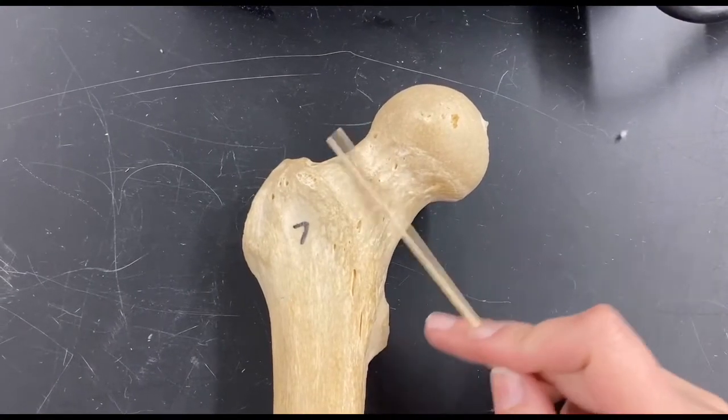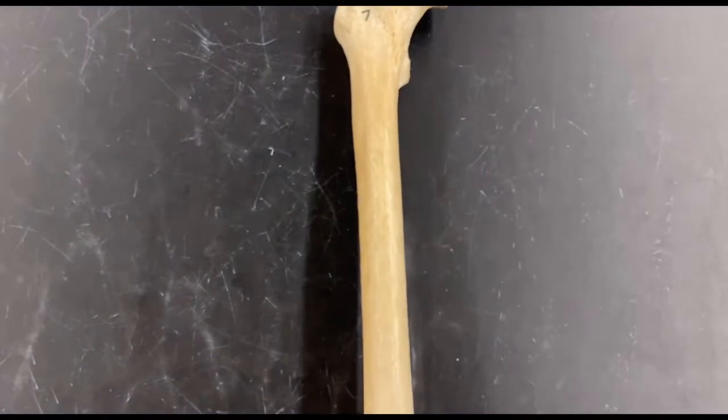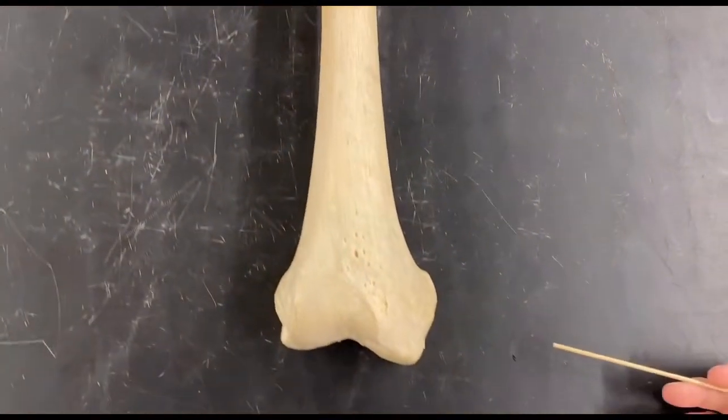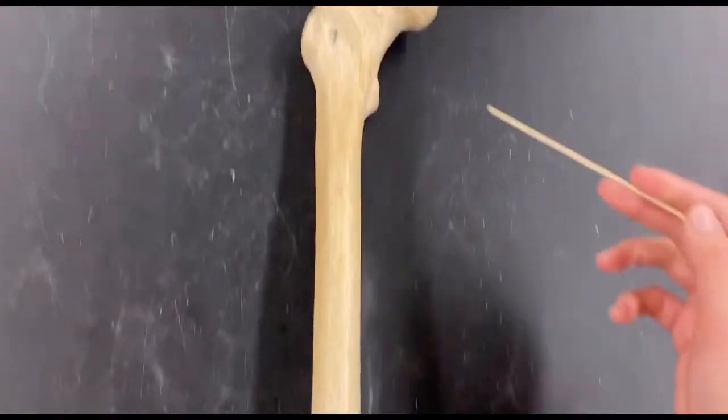This is the head, where it kind of narrows in is going to be called the neck, this region is the shaft, and again patellar surface.